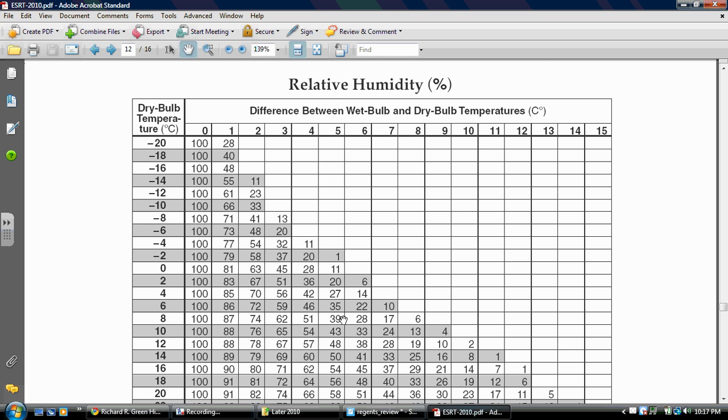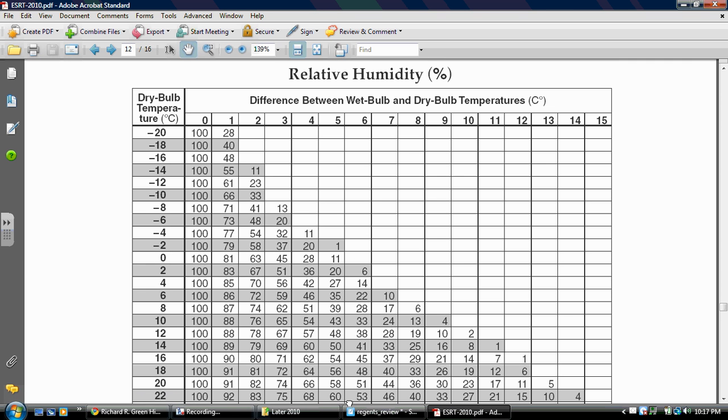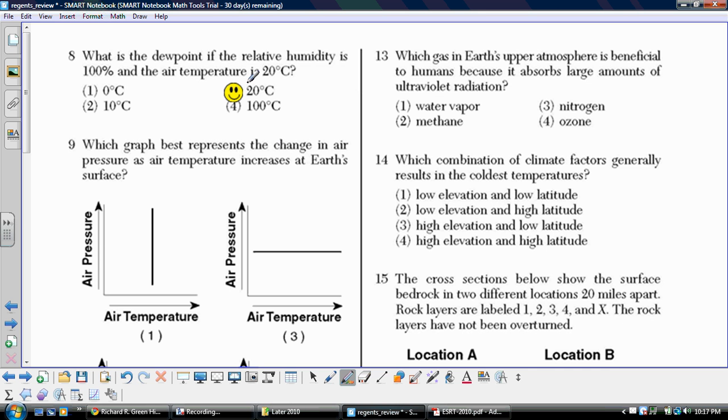If that is not your understanding of the phenomenon, we can use the chart as well. We've been given a dry bulb temperature of 20, and we were told the relative humidity is 100%. When we look over here, we find it in this column, which as you follow it up is a zero degree difference between the wet and dry bulb. So once again, if the dry bulb was 20 with a zero degree difference between the two, it's got to be the same.